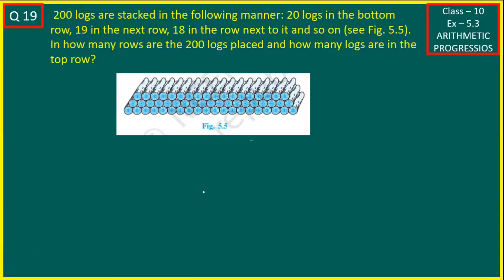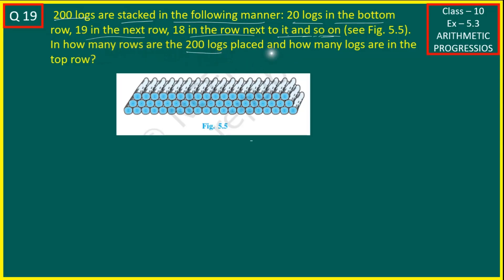Class 10 Maths Exercise 5.3 Arithmetic Progressions, Question No. 19. 200 logs are stacked in the following manner: 20 logs in the bottom row, 19 logs in the next row, 18 logs in the next row, and so on. In how many rows are the 200 logs placed and how many logs are in the top row?